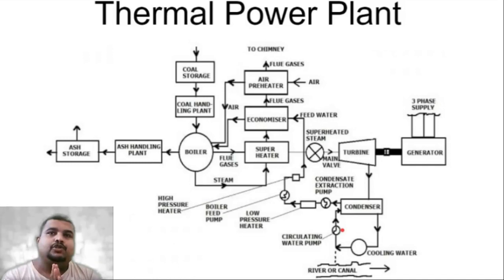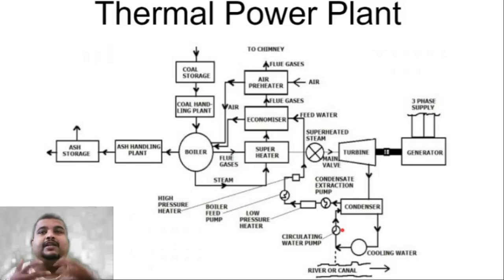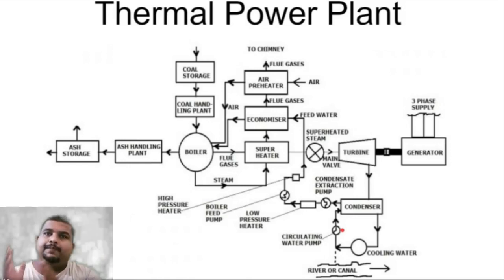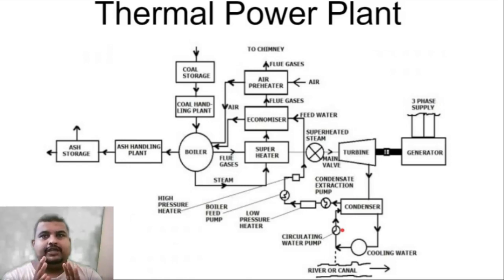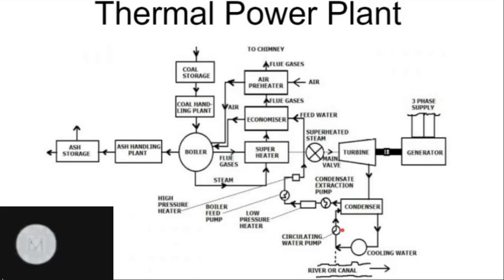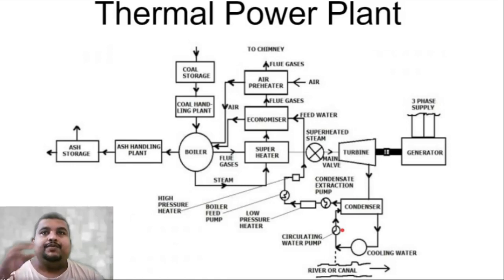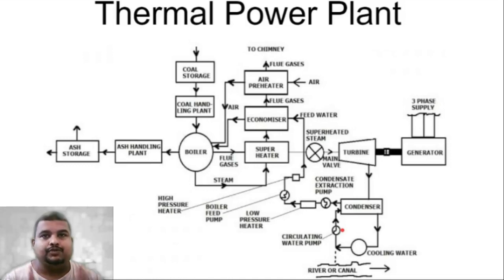When water reaches the boiler, that water must be heated inside the boiler to convert it into steam, and for that purpose you require the burning process. So the water has reached the boiler — the diagram is clear up to this point. Now we need to see that after the water reaches the boiler, its conversion into steam happens because of the burning process.